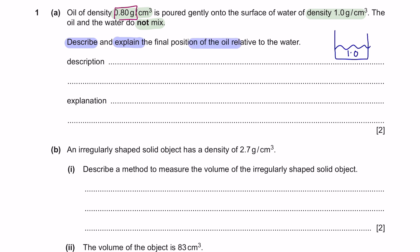The density of oil was 0.8 and it was poured gently into the water. Since the density of the oil is lower than the density of the water, the oil will stay on the surface of the water. The reason is because the oil has a much lower density compared to the water.